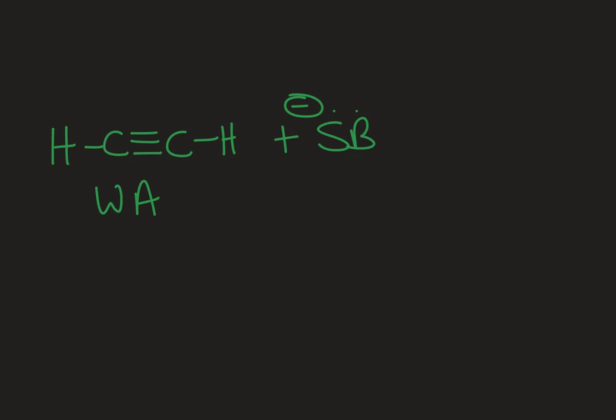So say I have some strong base and it is going to deprotonate this alkyne. So the strong base is going to pluck off that terminal H and those electrons are going to go onto that carbon right there. If I use a strong base, I can get an appreciable amount of the alkyne that is deprotonated.